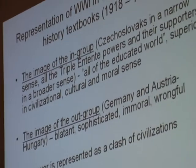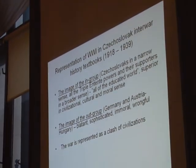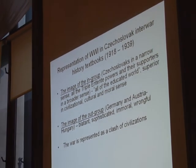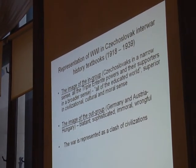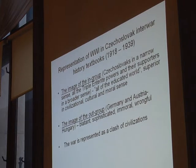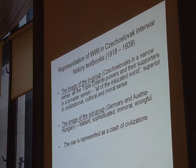Regarding the images of in-group and out-group: the in-group — those with positive qualities — is the Czechoslovaks in a narrow sense, or members of the allied powers in a broader sense. They are described as educated and superior in civilizational, cultural, and moral terms. On the other hand, the out-group includes Germans, Austrians, and Hungarians, who are described as brutal, immoral, and wrongful. The world is thus represented as a clash of civilizations.